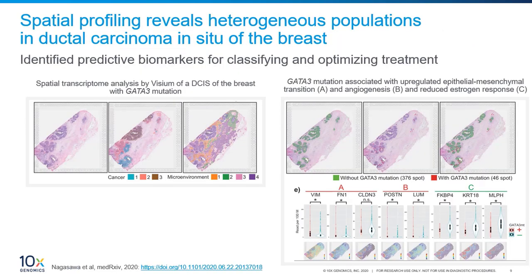In this study, researchers from the University of Tokyo identified predictive biomarkers for classifying and optimizing treatment of ductal carcinoma in situ, or DCIS, of the breast. They first analyzed the integrated clinical features of 431 cases of DCIS, followed by deep sequencing analysis in a 21-case discovery cohort and a 72-case validation cohort. The five most critical markers of the aggressiveness of DCIS identified were: age of less than 45 years, HER2 amplification, GATA3 mutation positivity, PIK3CA mutation negativity, and progesterone receptor protein negativity.